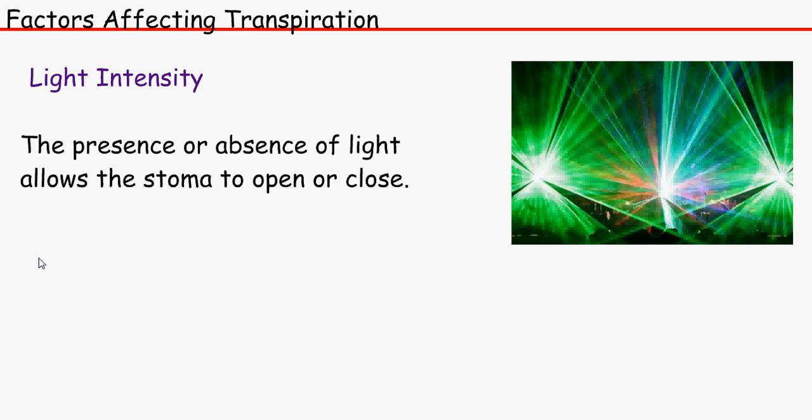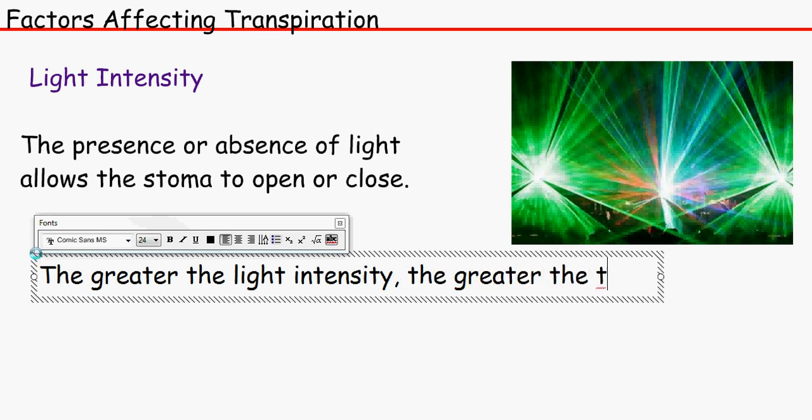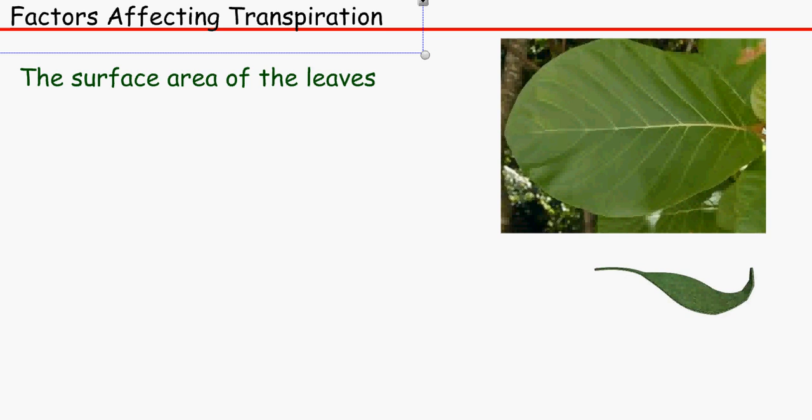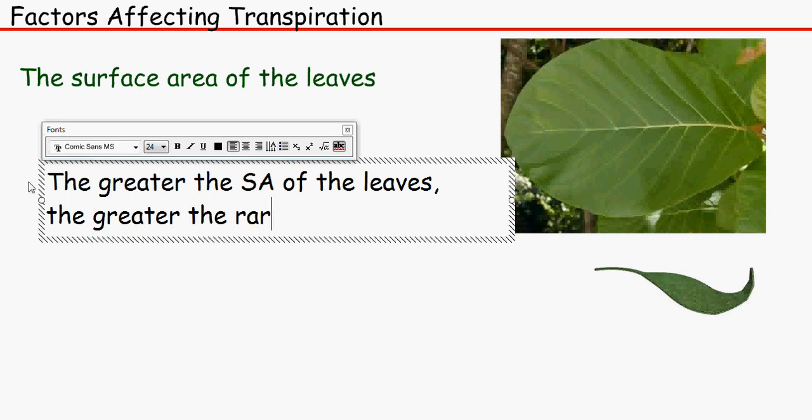The next one is the surface area of the leaves. Obviously if you think about it, this leaf will lose more to transpiration than this leaf, partly because there are more spongy mesophylls and so on and so forth, the small spaces. But it's because of the surface area of it that makes it lose the water more. There is more space for the water to be lost, basically. So the greater the surface area of the leaves, the greater the rate of transpiration.